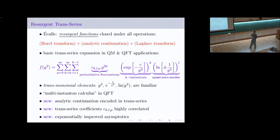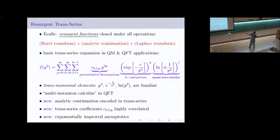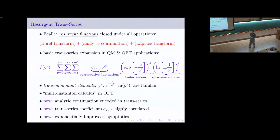These elements are functionally independent — I can't expand one in powers of another. From a physics perspective, we recognize each of these: we recognize perturbative fluctuations, instanton fluctuations, and the logarithms generated when you account for interactions between instantons and anti-instantons. Putting these together is what we call multi-instanton calculus in field theory.